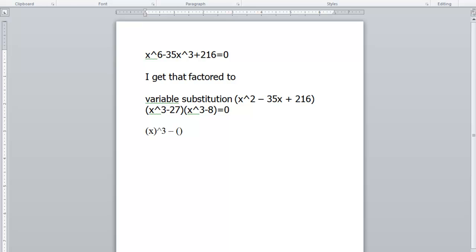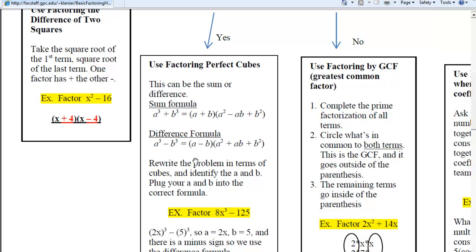Then what do you have to cube in order to get 27? That's 3. So the x represents the a portion. The 3 represents the b portion from your formula. So you just plug those values into the formula.